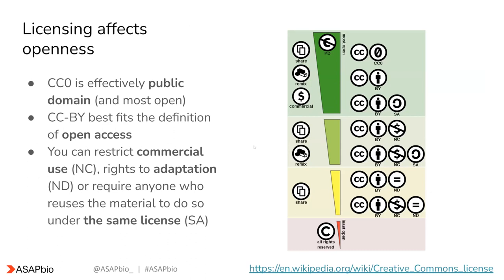Licensing affects the openness of your work and it impacts how others can make use of your work. The CC0 waiver effectively puts your work into the public domain. CC BY attribution requires those who reuse, remix, or otherwise take advantage of your work to credit you by name. And you can apply other license restrictions like commercial use or adaptation, or require that anyone who uses the material applies the same license.